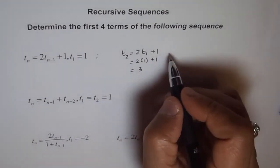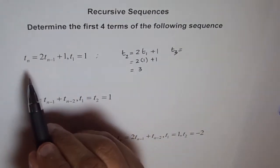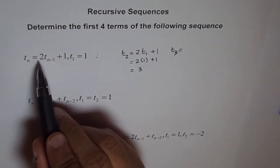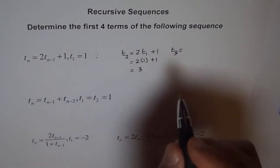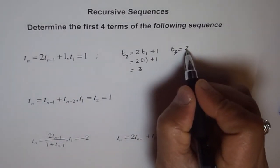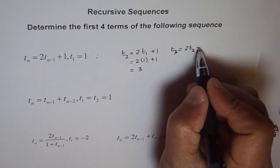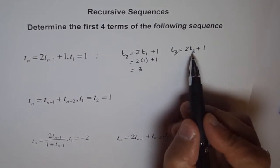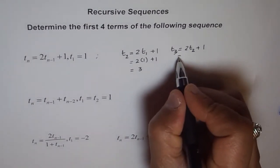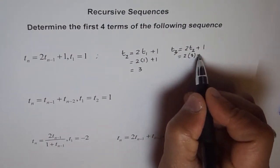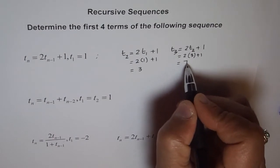Now to find T3, we will again use the same formula. So T3 will be 2 times T3-1, which is T2, plus 1. Now T2 we just found as 3. So we will use this value here. It is 2 times 3 plus 1 and we get our value as 6 plus 1 as 7.